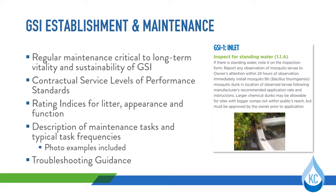The manual then provides a list of standard maintenance tasks to be performed based on the green stormwater infrastructure component types. Photo examples are included, often providing examples of what is considered good and bad. General guidelines regarding frequency of each task are also included. Because maintenance needs vary greatly by site and surrounding conditions, these frequencies are intended to be starting points. The contractor is required to adjust the maintenance frequencies as needed based on meeting the required service levels of performance standards. Lastly, a section is provided on troubleshooting recurring or larger maintenance issues that go above and beyond standard preventative maintenance tasks, drawing on lessons learned from past projects.